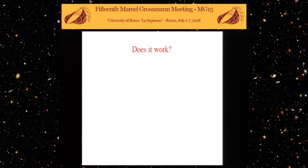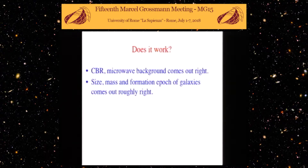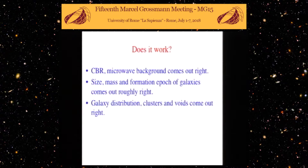Does it work? Well, the CMB and the microwave background come out exactly right — everything fits to as many significant figures as we can measure. Do we get the right size for galaxies? Yes, we get 10¹⁰ to 10¹¹ solar masses, and the era of formation is roughly right. The galaxy distribution, clustering, voids, intergalactic medium, reionization of hydrogen and helium, and high-temperature galaxy clusters all come out right.